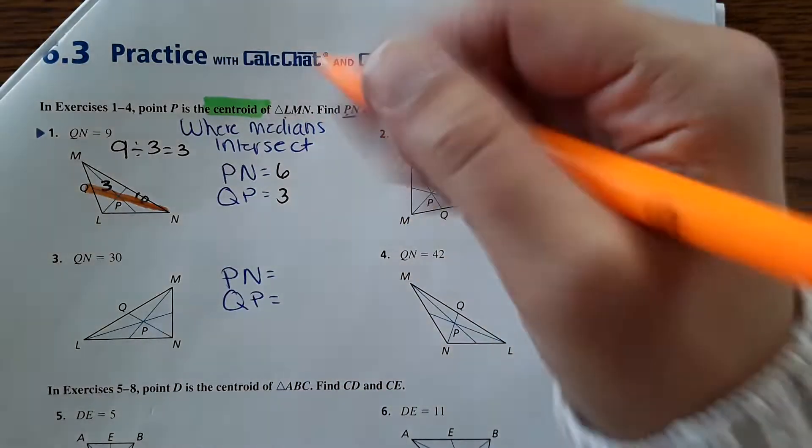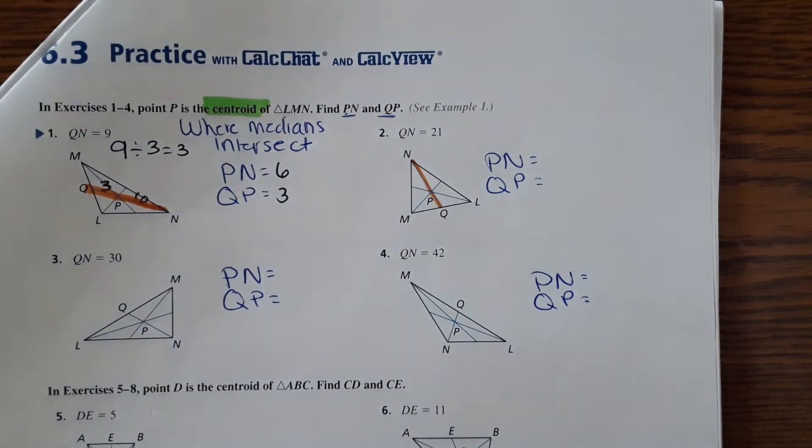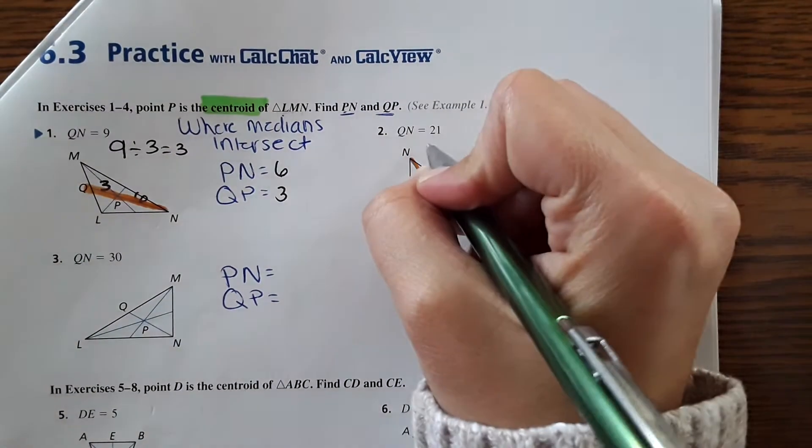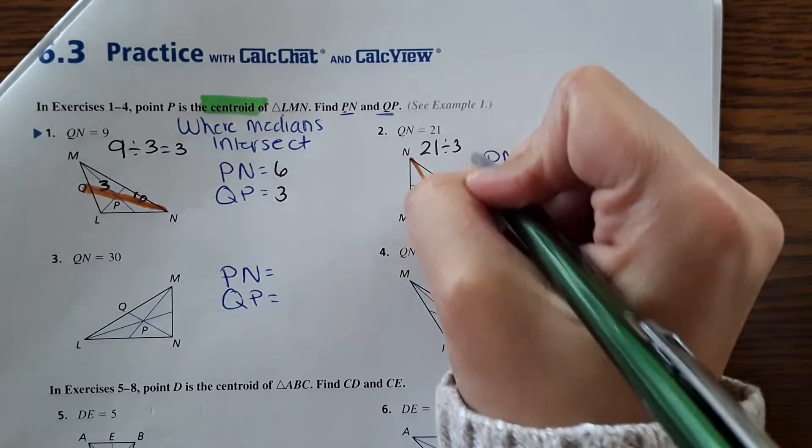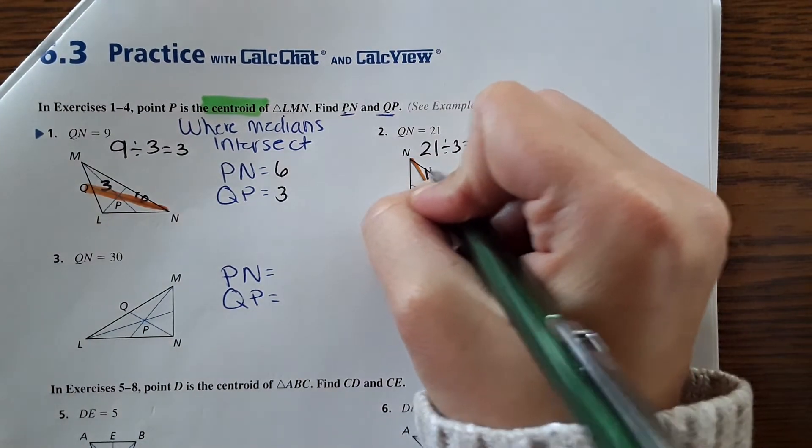And the next three problems are the same. So QN right here, it says 21. Okay, 21 divided by three is seven. So the shorter side is going to be seven, and then the longer side will be double that, which is 14.